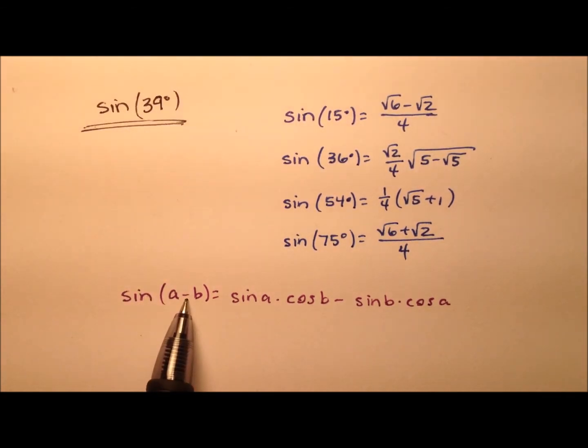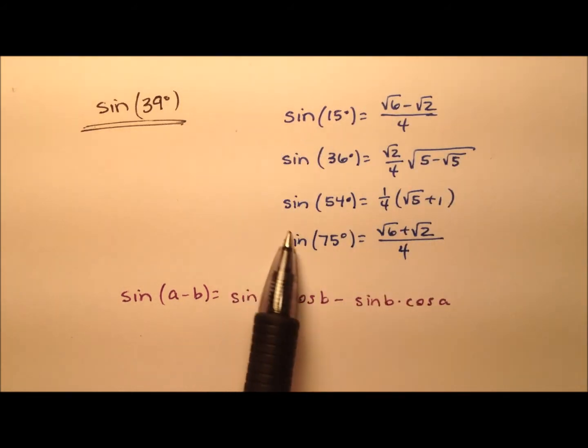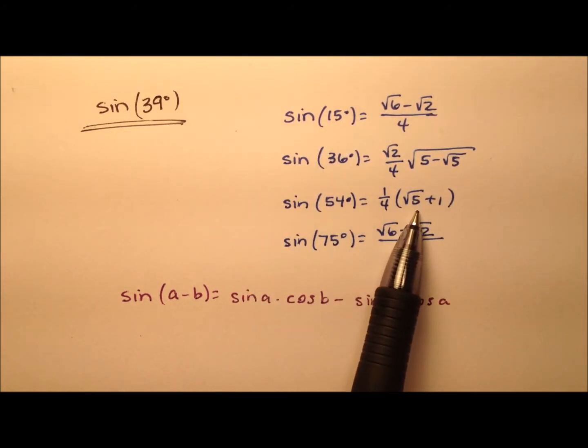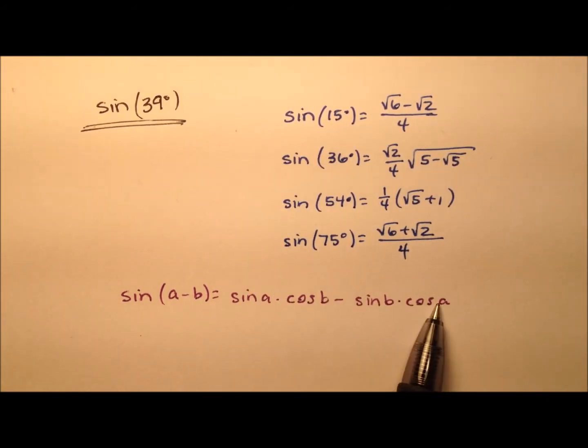We're going to use the difference identity for sine, which says the sine of two angles, a and b, and we're going to be subtracting them. I can expand this as the sine of a, which is the first angle, times cosine of b, which is the second angle, and then minus sine of b times cosine of a. You'll also see we have four values up here that ultimately we're going to be using and plugging into this formula.